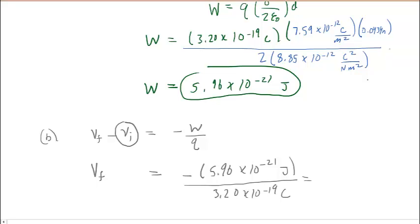And when we crunch that down, we get negative 0.0186 joules per coulomb as the answer to part B.